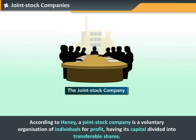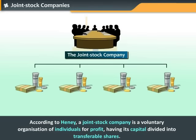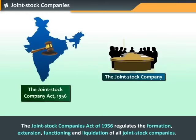Henry defines a Joint Stock Company as a voluntary organization of individuals for profit, having its capital divided into transferable shares. In India, the Joint Stock Companies Act of 1956 regulates the formation, extension, functioning and liquidation of all Joint Stock Companies.